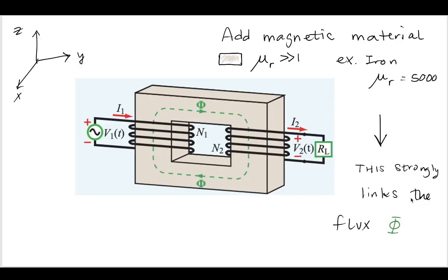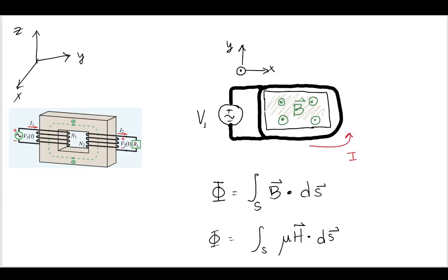So for the transformer we have this strongly linked flux. Let's take a look at why that might be the case. If we were to add in a coordinate system where the z is going up, now let's kind of tilt our transformer. So now we're sort of looking down in this direction.